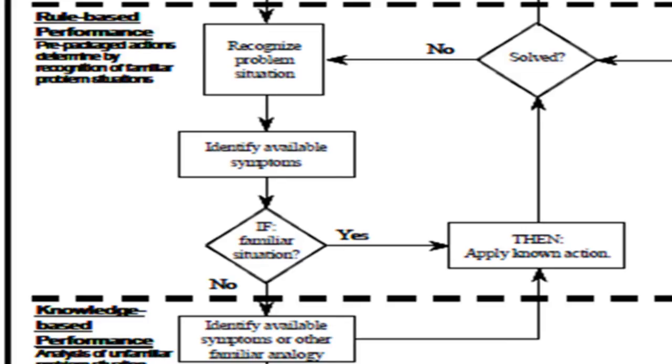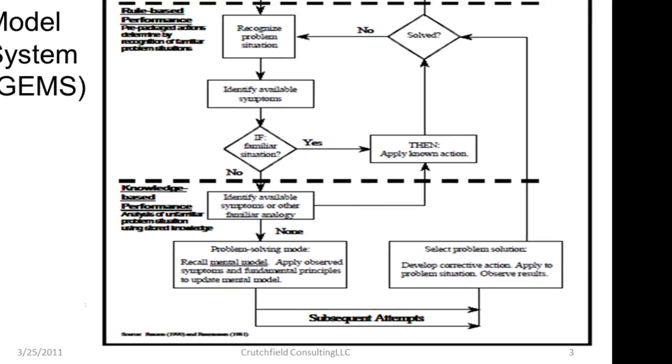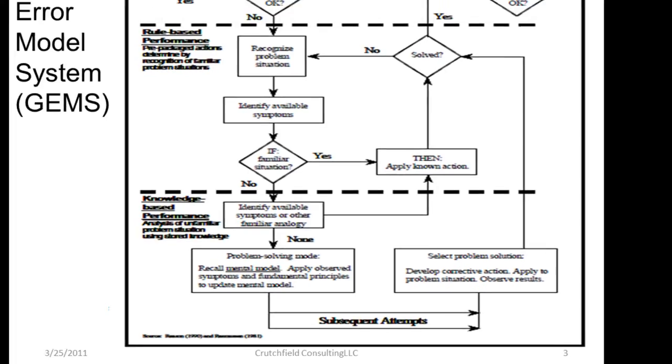If the problem does not fit a familiar, predetermined situation, we move into knowledge-based performance. We have to identify available symptoms or familiar analogies that can be used to identify what the problem is. If it can be determined that the problem is matched by analogy to a familiar situation, we can move back into the rule-based performance level. If not, a problem-solving mode is required. We have to recall mental models that we can apply or use observed symptoms and make use of fundamental principles to update our mental models. We select a problem-solving solution and develop corrective actions to the situation and observe the results. Once the new corrective actions are determined, we move back into rule-based performance to determine if the problem has been resolved. If it has, the task can continue. If not, we go back through the iteration until the issues are resolved.